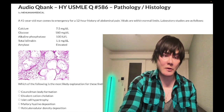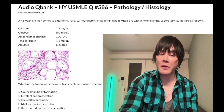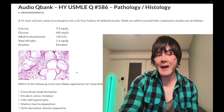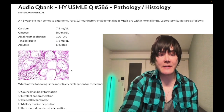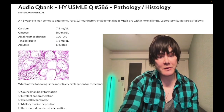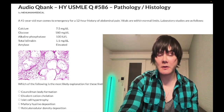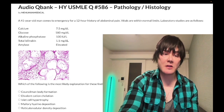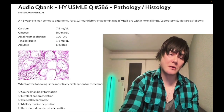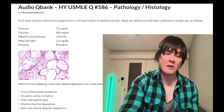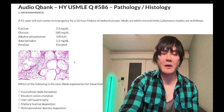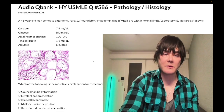In acute pancreatitis, we have enzymatic fat necrosis: pancreatic lipases convert triglycerides into monoglycerol and three fatty acids, and those fatty acids bind calcium — that's chelation and saponification (soap formation), which is what we see in this image. The image shows globules of fat with surrounding loss of architecture.